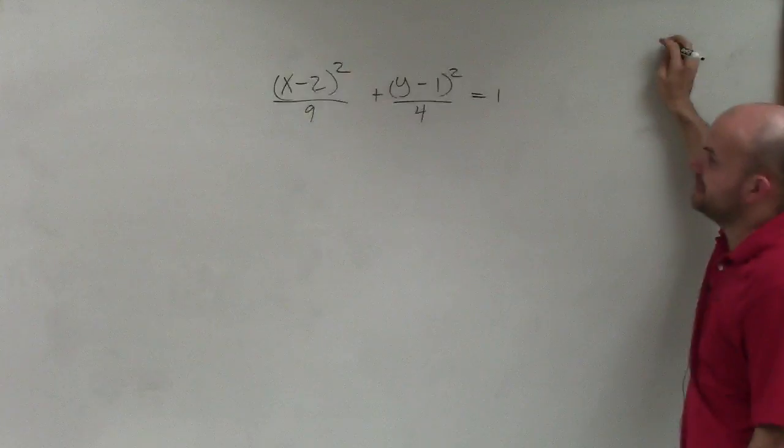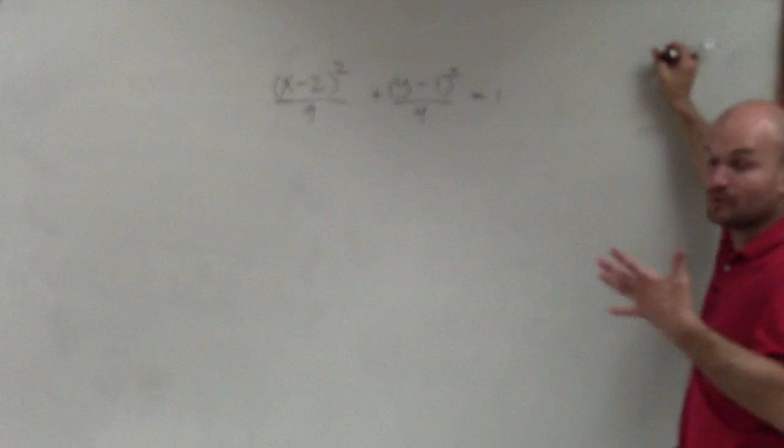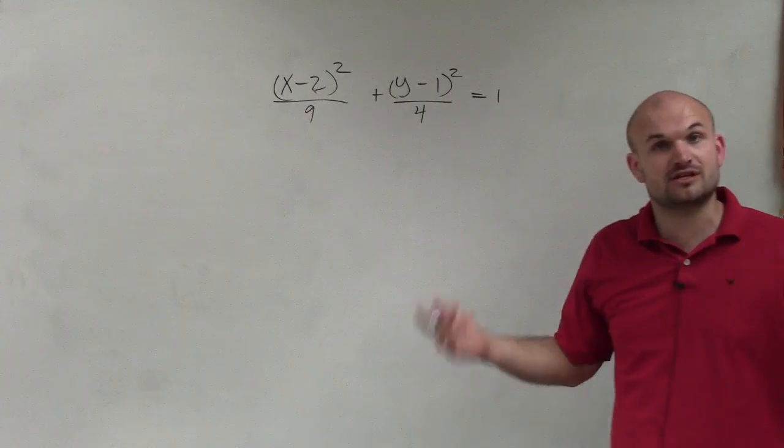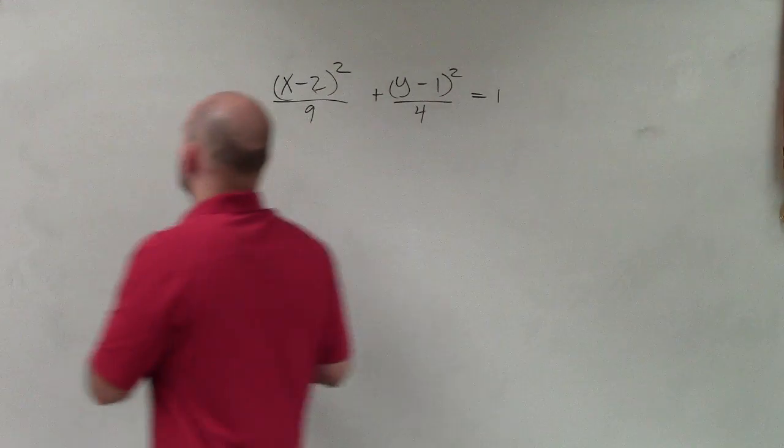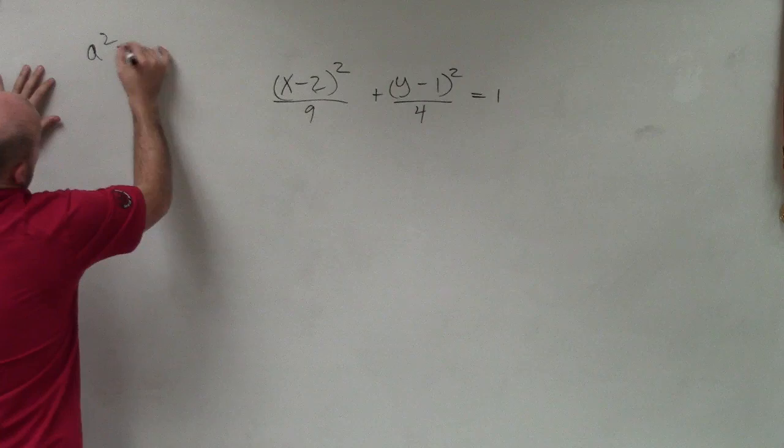The first thing I want to do is identify my a², b², and c². I'm going to do that by first looking at this and identifying the larger denominator, which is always going to be my a², which in this case is 9. So a² = 9.